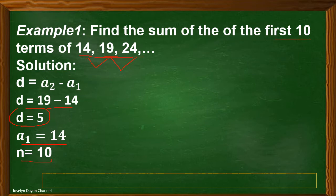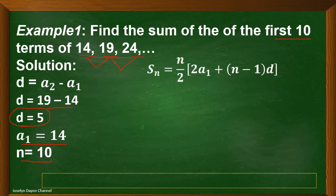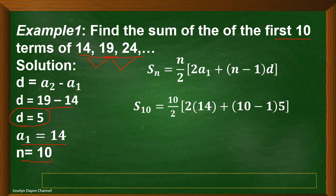Now we are going to write the formula. Next, substitute. Since we are looking for the sum of the first 10 terms, S sub 10 equals n, 10 divided by 2, times the quantity of 2 times A sub 1, which is 14, plus the quantity of n minus 1 — that's 10 minus 1 — times d, which is 5.